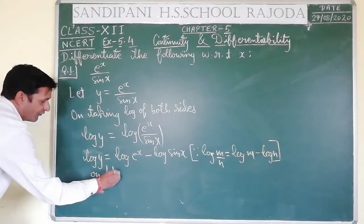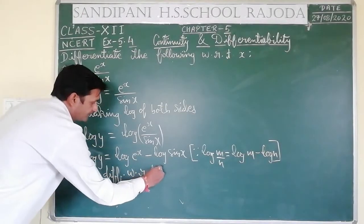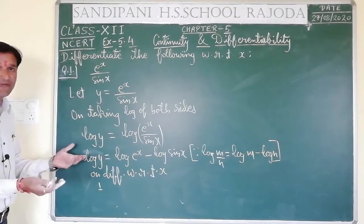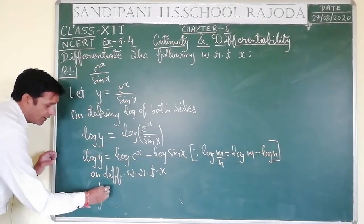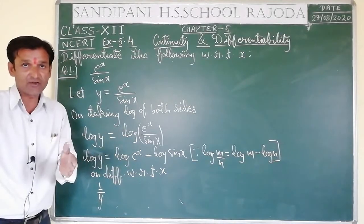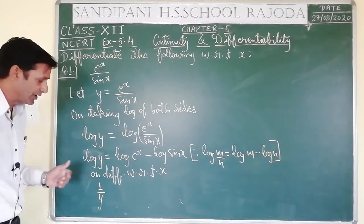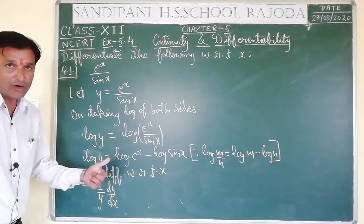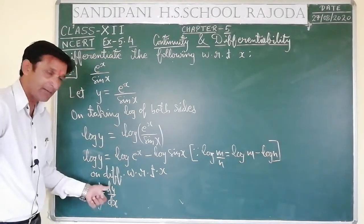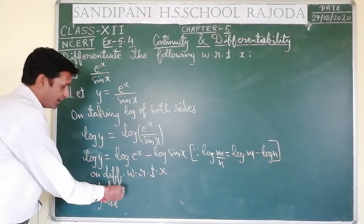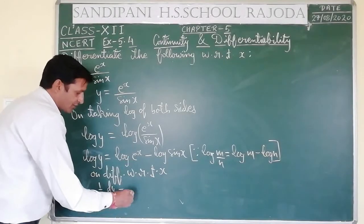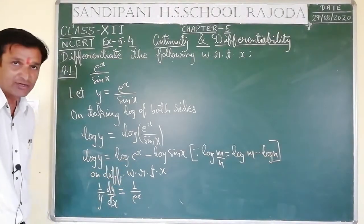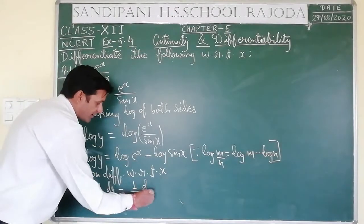On differentiating with respect to x, log y का differentiation — log x होता तो 1/x — यहाँ log y है तो 1/y, and dy/dx also written because this is y not x. So (1/y)·dy/dx = [1/e^x · e^x] - [1/sin x · cos x]. e^x upon e^x cancel होगा, giving 1, minus cos x/sin x.